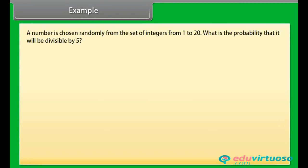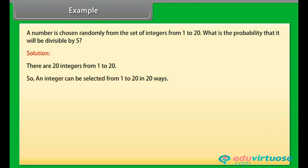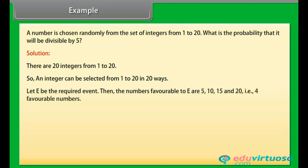A number is chosen randomly from the set of integers from 1 to 20. What is the probability that it will be divisible by 5? Solution: There are 20 integers from 1 to 20, so an integer can be selected from 1 to 20 in 20 ways. Let E be the required event.